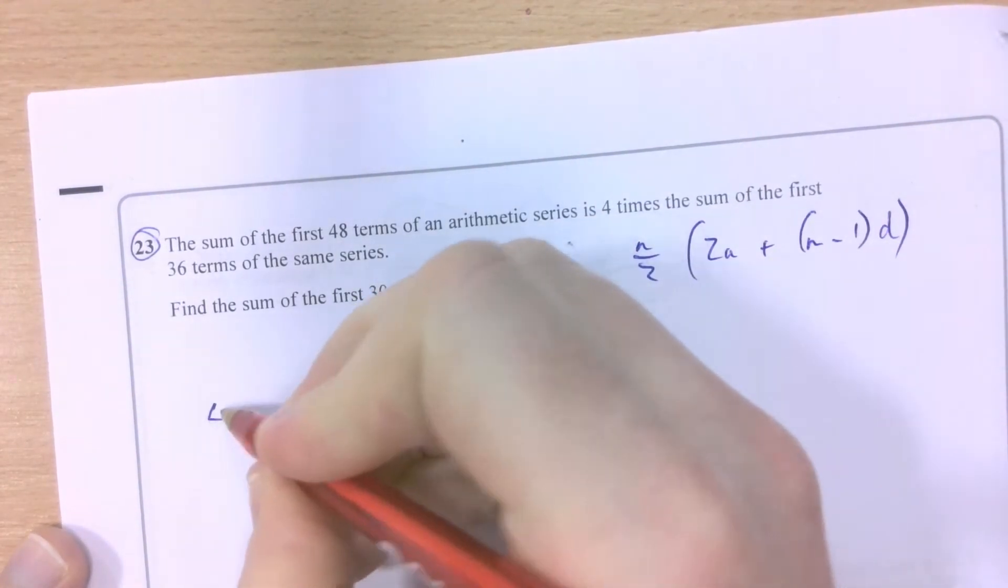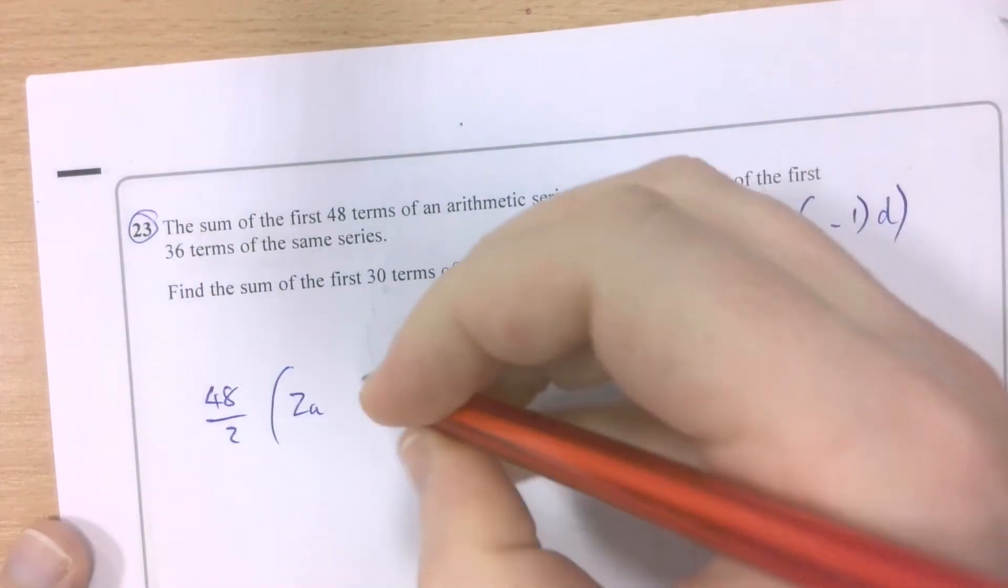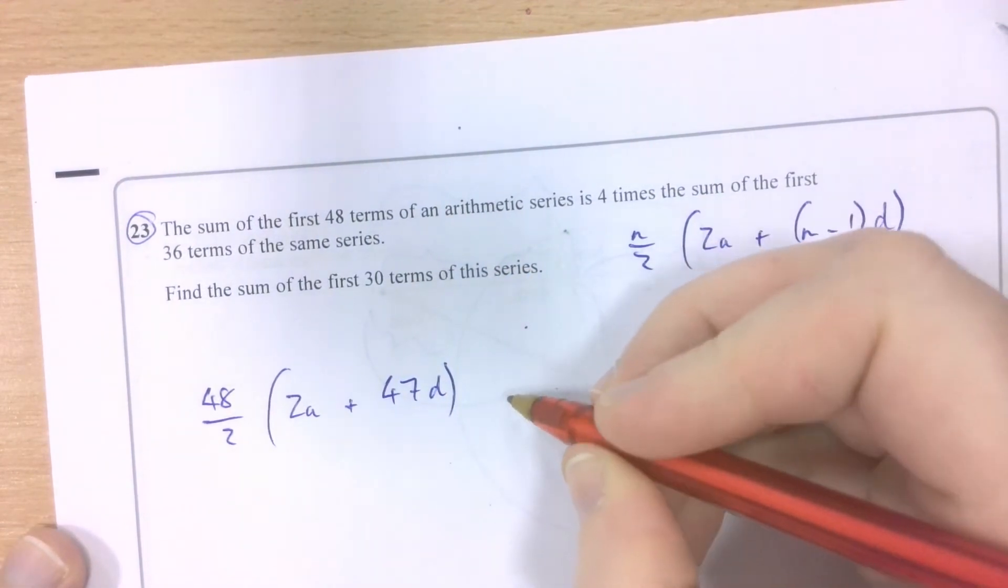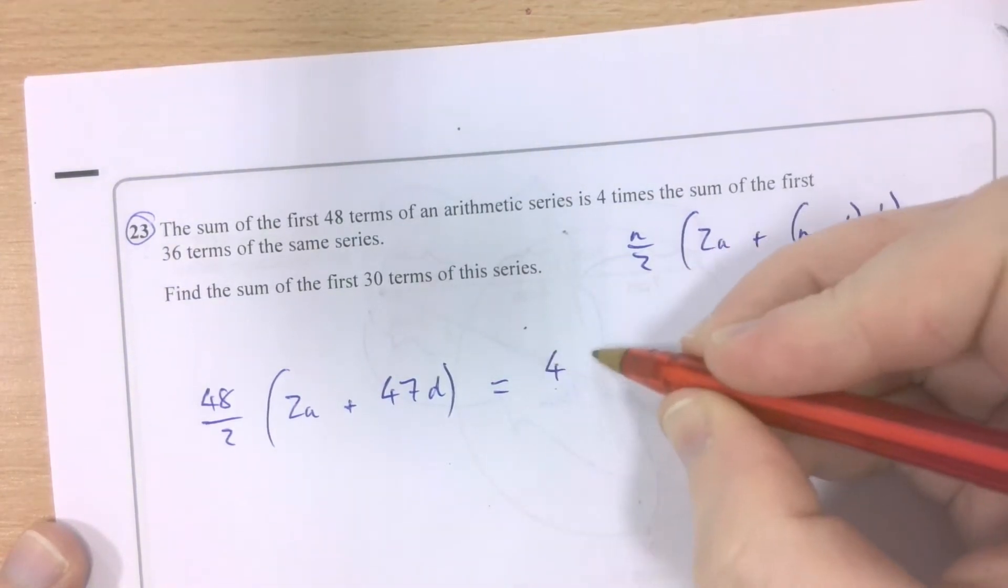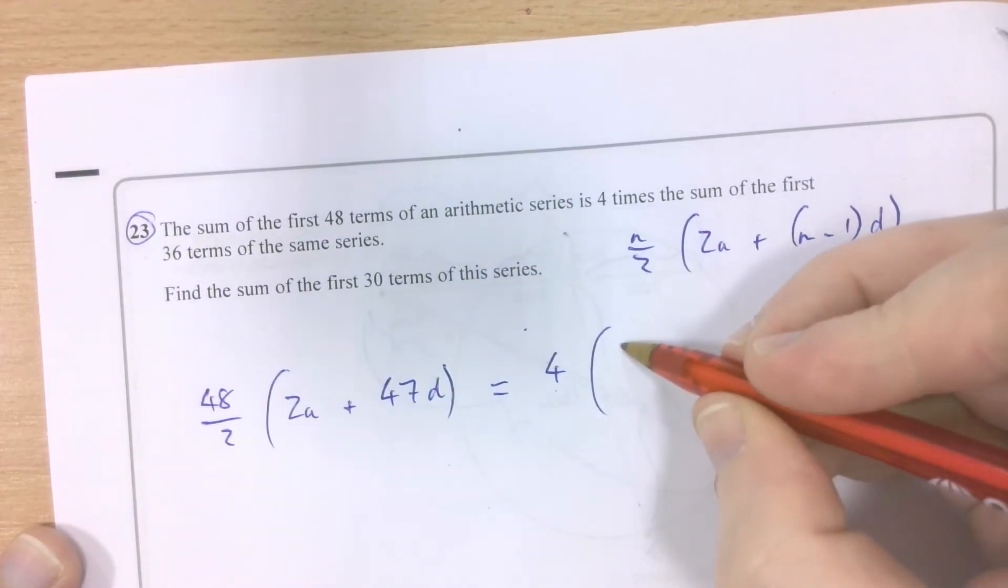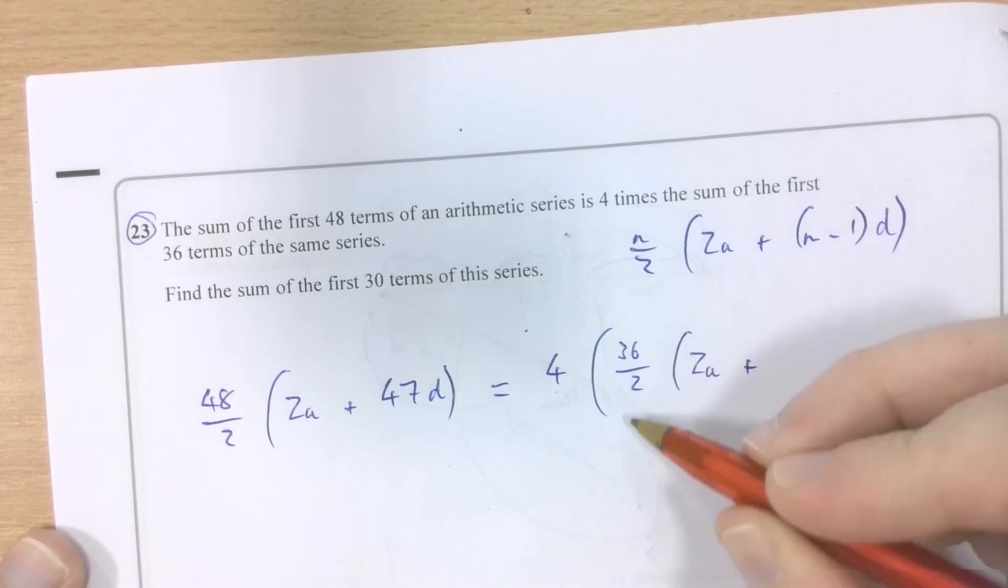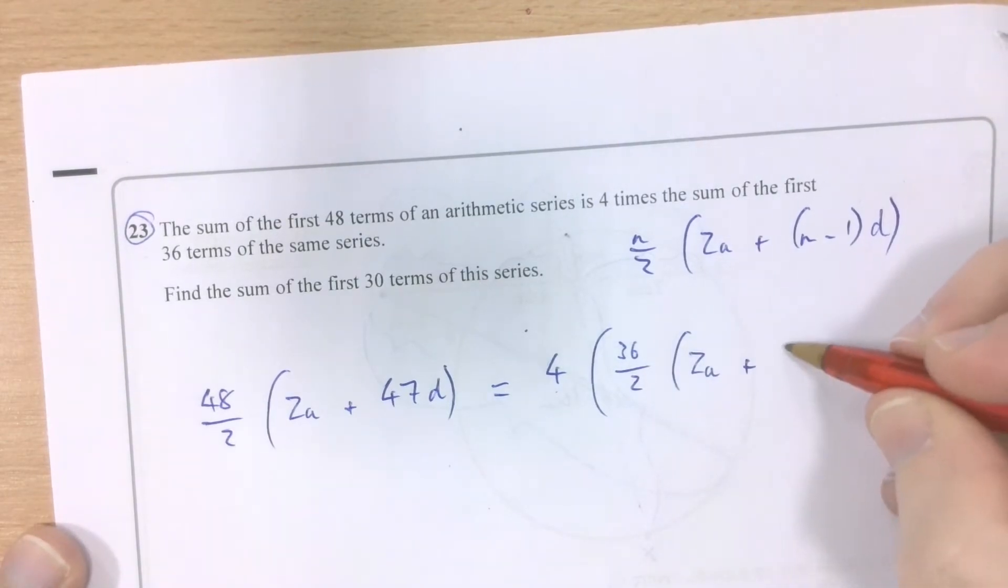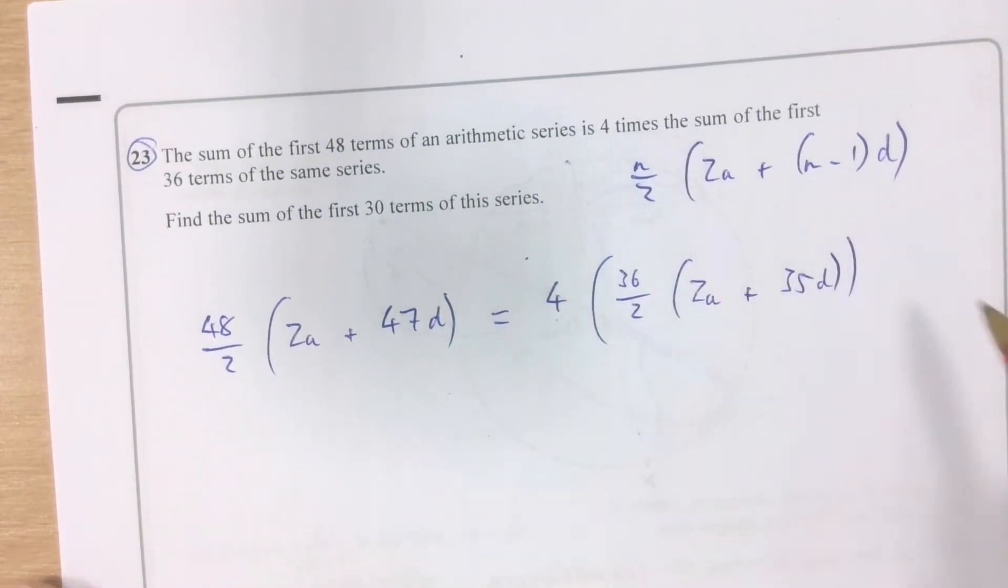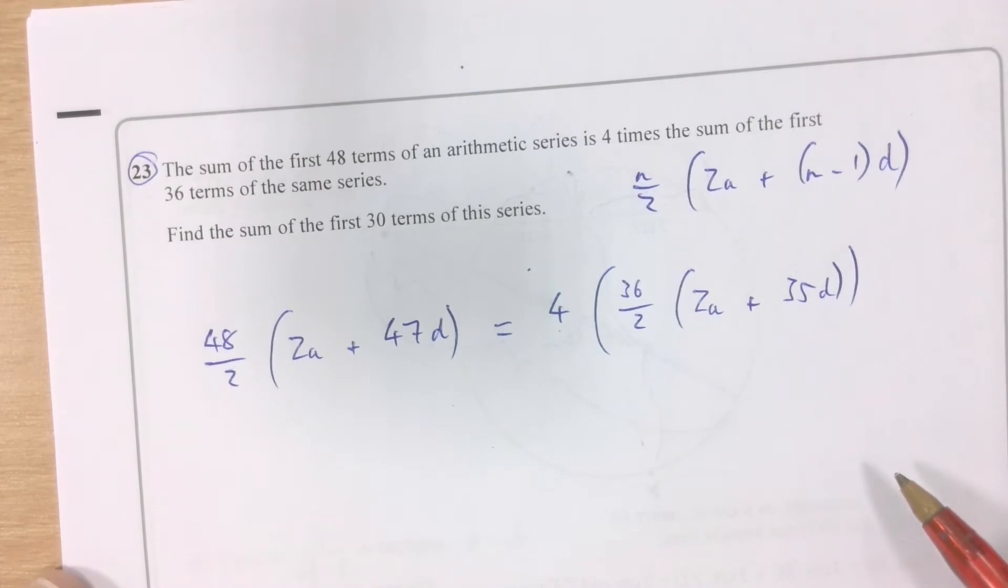First of all, replace n with 48. 48 over 2 multiplied by 2a, which is something I don't know. 48 take away 1 is 47d. Now, that is equal to 4 times the same formula, just with 36 used for n instead. So it will be 36 over 2, and 2a will be the same. And then instead of 47, 36 take away 1 is 35d. That is effectively the equation that we've been told, expressed algebraically, from the information that we have in this work.